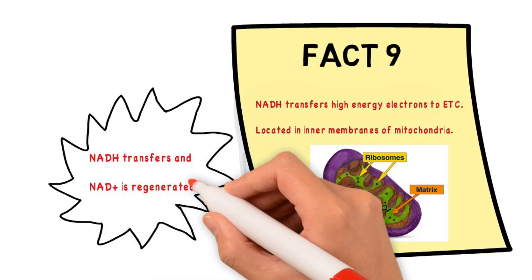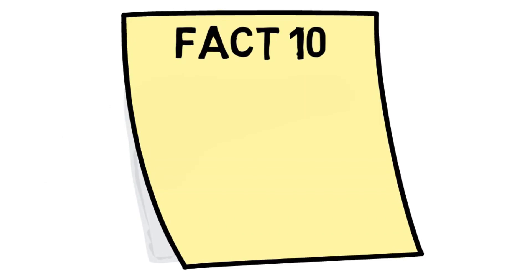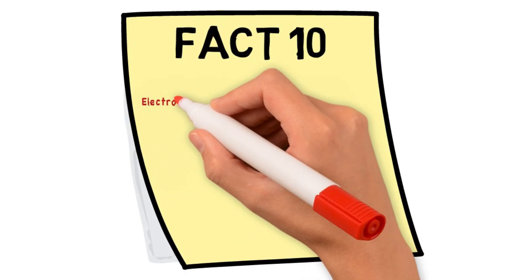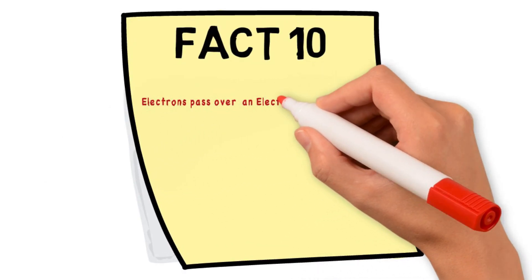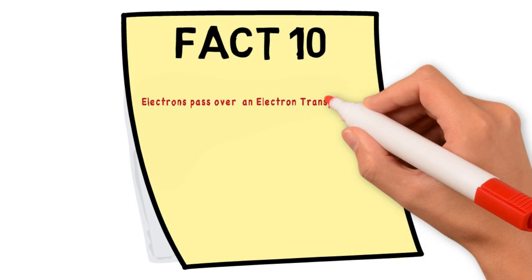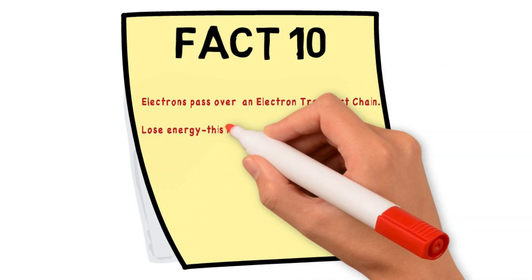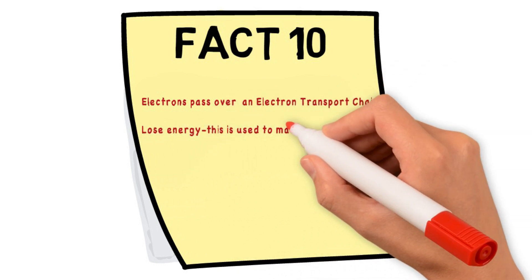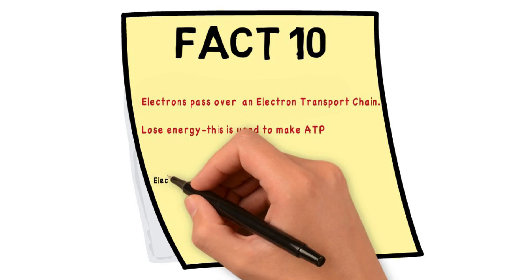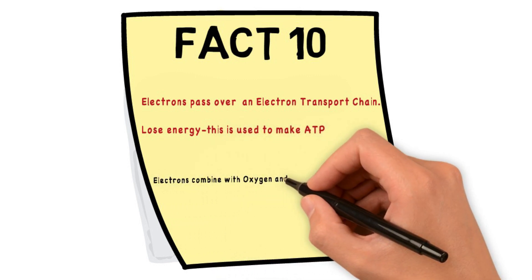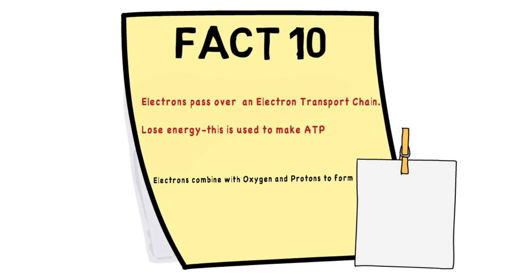Fact ten: the electrons that have been transferred pass over electron transport chains, losing energy, and this energy is then used to make ATP. The electrons then combine with oxygen and protons to form water.